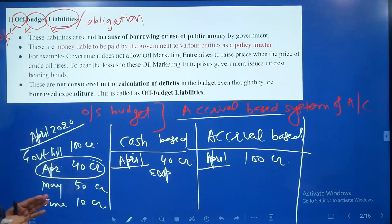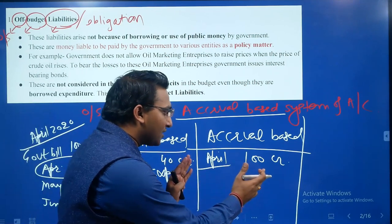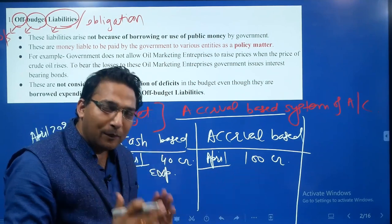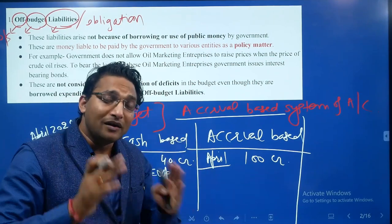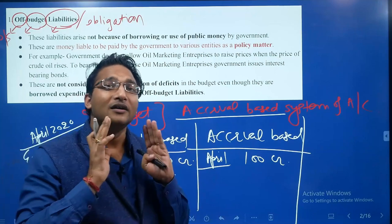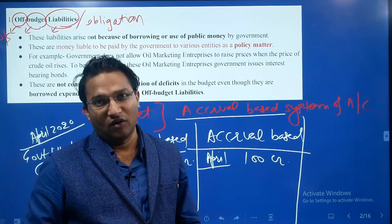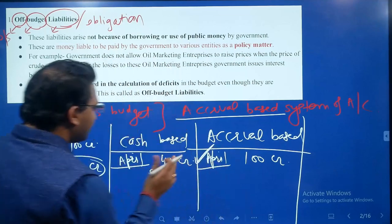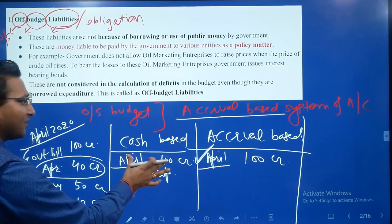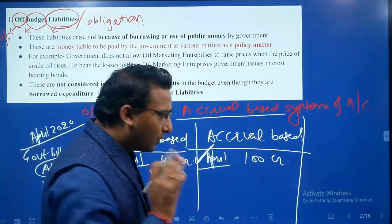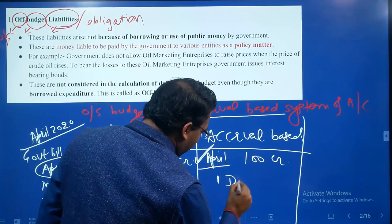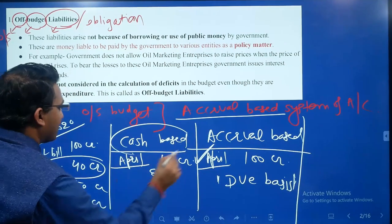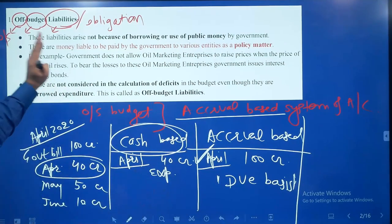In case of cash-based accounting, we see how much is the cash transaction — in this case, 40 crore rupees in April. In case of accrual-based accounting, we see how much is the total bill; it might be paid in cash this month or in future, but it has already been billed and is due from the government. So in cash-based, only cash transactions are noticed; in accrual-based, due transactions are noticed.